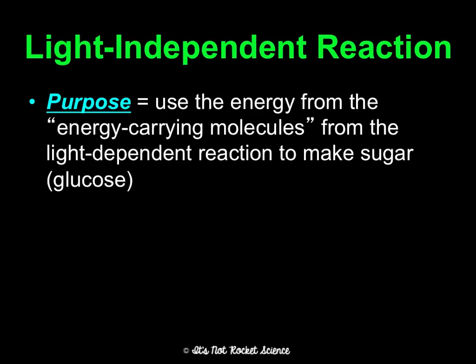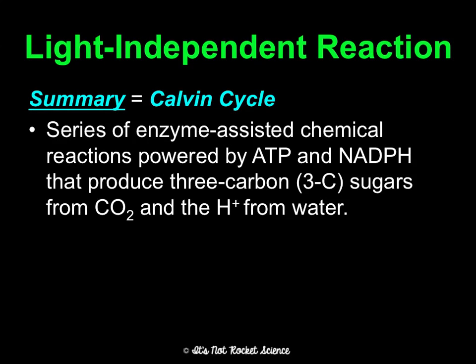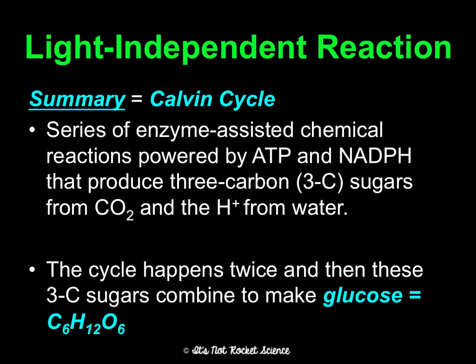We're halfway there — now the light-independent reaction. The purpose here is to use the energy in ATP and NADPH from the light-dependent reaction to actually make sugar, which was the original goal. This happens in the stroma, the syrupy part of the chloroplast. The Calvin cycle is a series of enzyme-assisted chemical reactions powered by ATP and NADPH. It produces three-carbon sugars from carbon dioxide and hydrogens from water. The cycle happens twice, and the two three-carbon sugars combine to make glucose, a six-carbon sugar.